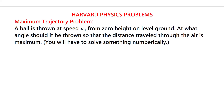Hello friends. This is a Harvard physics problem related to projectile motion. We have to find the maximum trajectory length. The problem says a ball is thrown at a speed V0 from height zero on ground level. At what angle should it be thrown so that the distance travelled through the air is maximum?